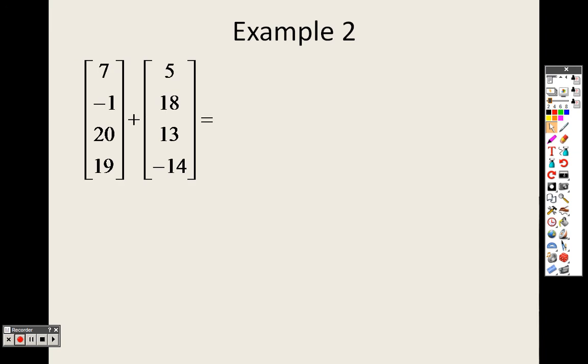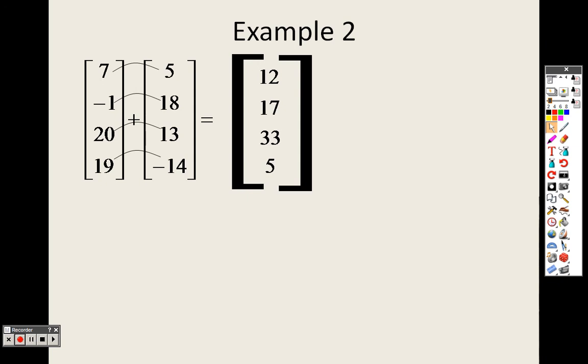So example 2, it doesn't matter the shape of how they look, you still add them in order. 7 plus 5 is 12, negative 1 plus 18 is 17, 20 plus 13 is 33, 19 plus negative 14 is 5. And you just put them in the matrix. You're just adding accordingly.